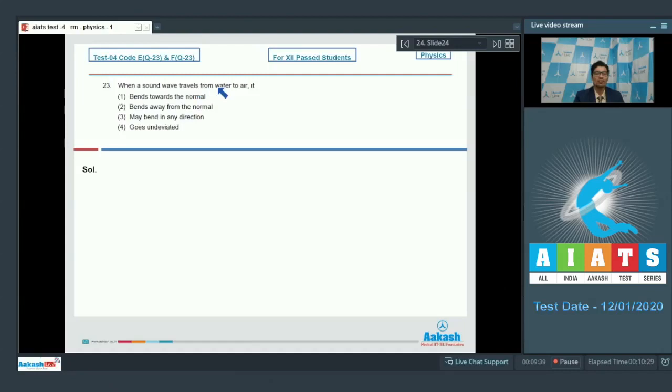when a sound wave travels from water to air, it first bends towards the normal, second bends away from the normal, third may bend in any direction, or fourth goes undeviated.